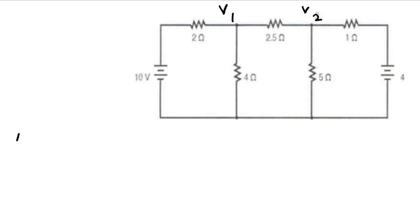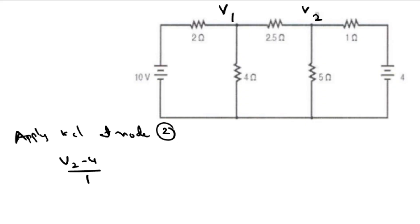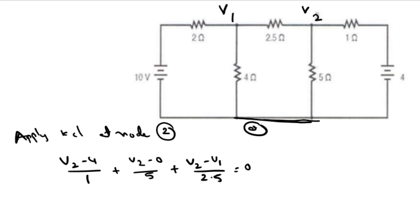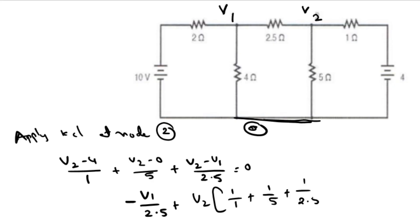Applying KCL at node 2: V2 minus 4 by 1, plus V2 minus 0 by 5, plus V2 minus V1 by 2.5, equals 0. Separating V1 and V2 terms: minus V1 by 2.5, plus V2 into (1/1 + 1/5 + 1/2.5), equals 4 by 1. This is equation number 2.